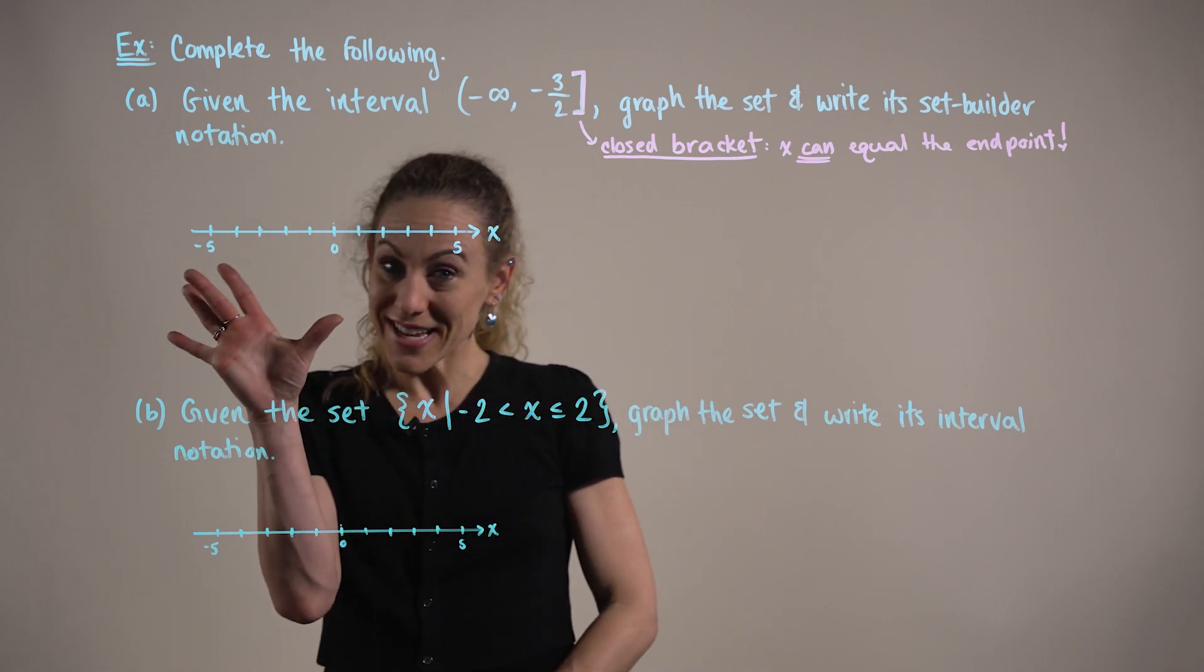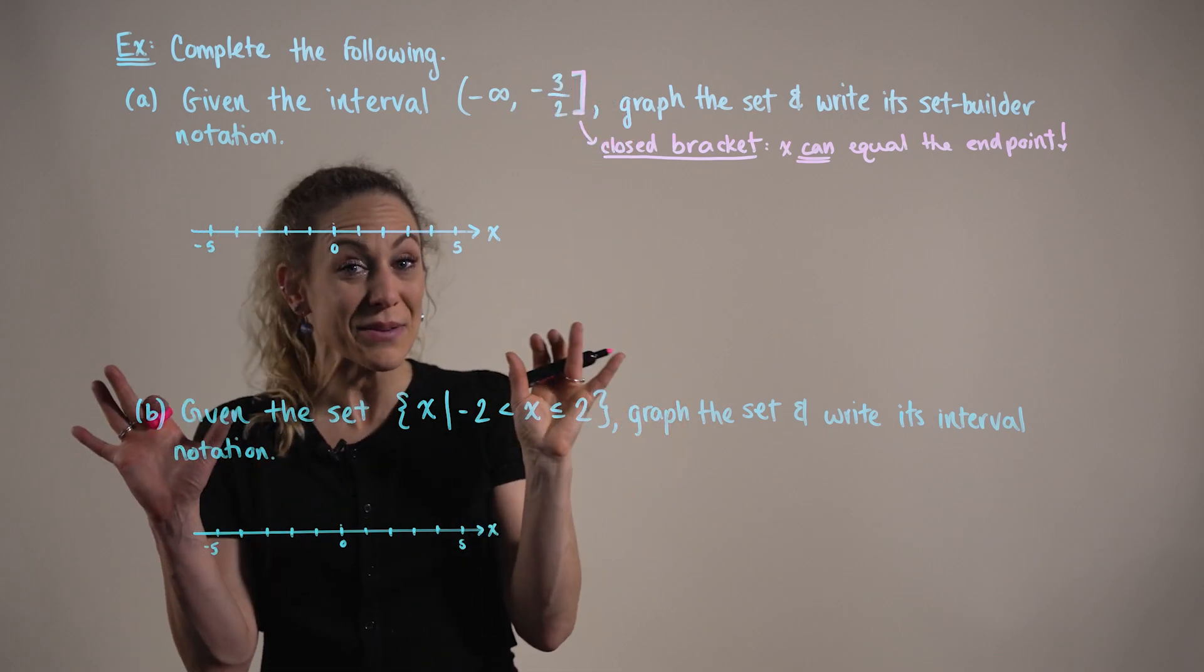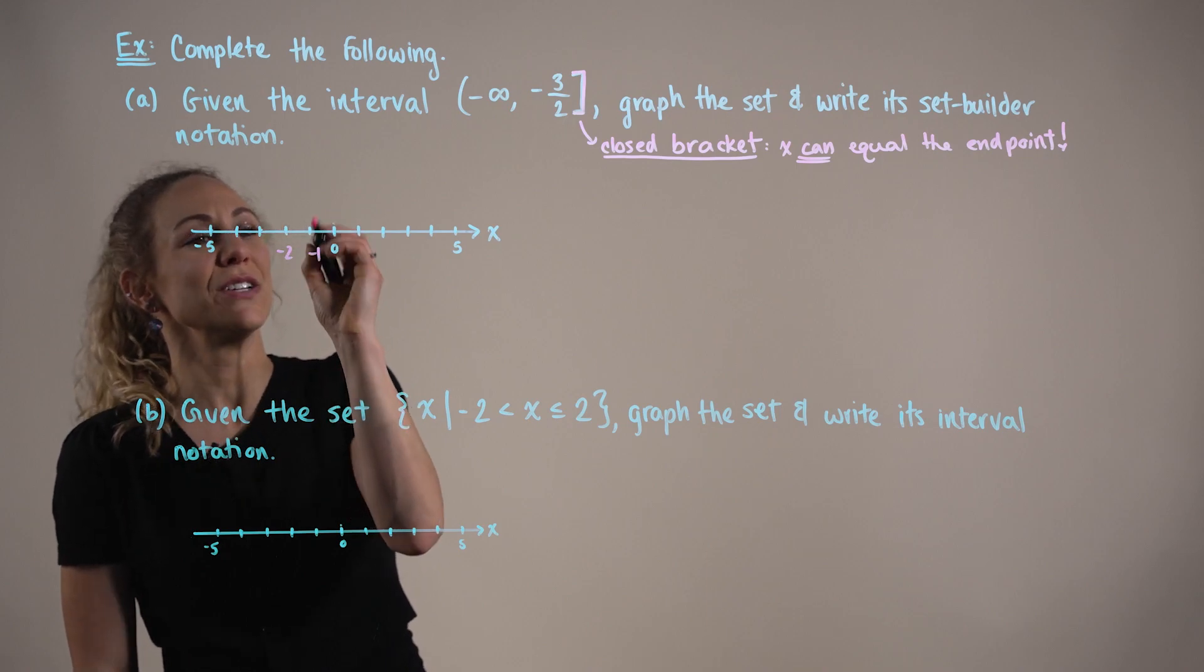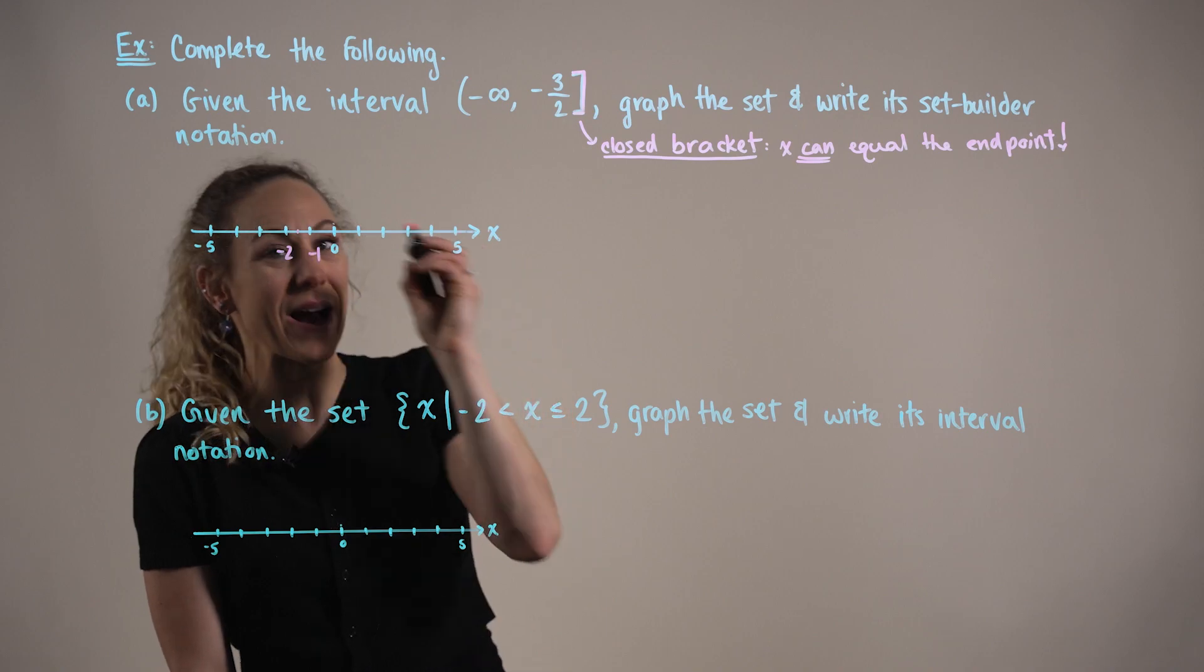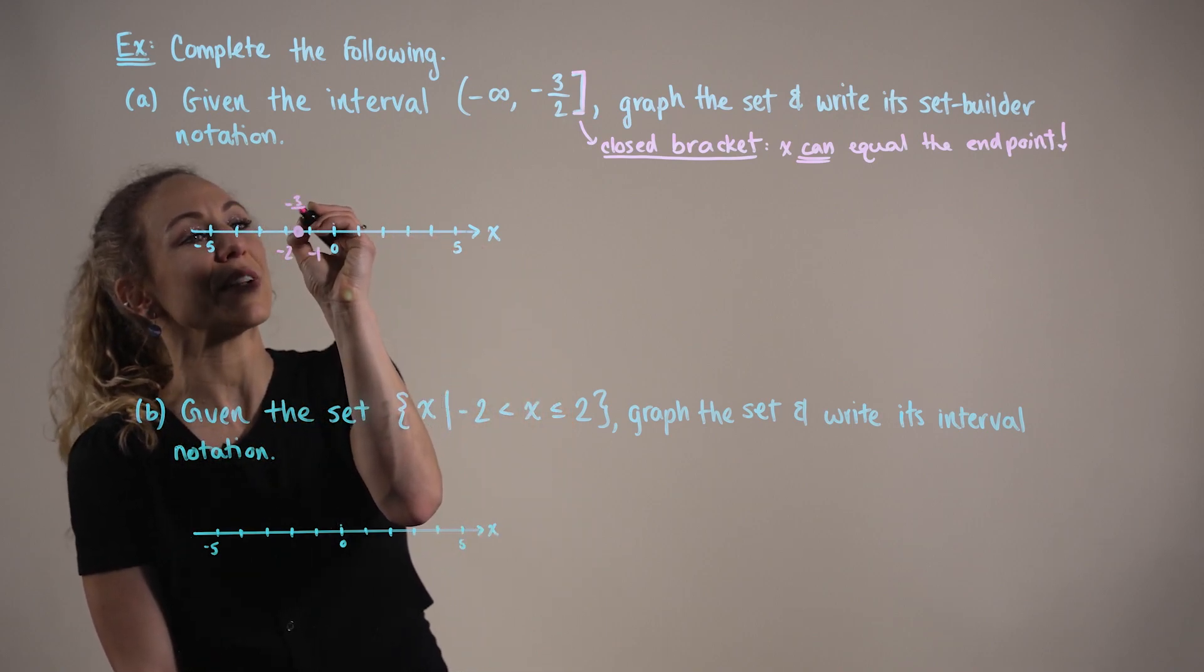So looking down at our graph, we can observe negative three halves is going to be in between negative two and negative one. Right about there. And since we have the closed bracket, we're going to draw a closed dot at this end point, minus three halves.